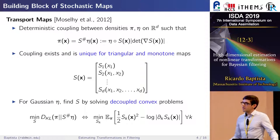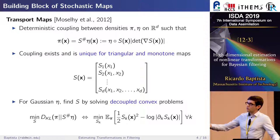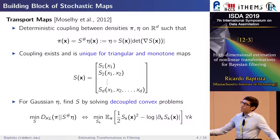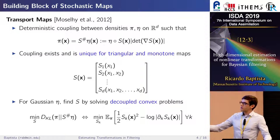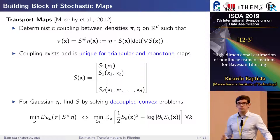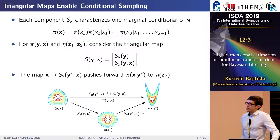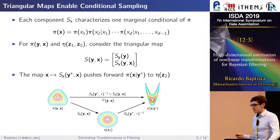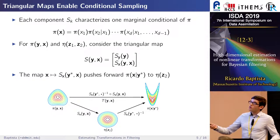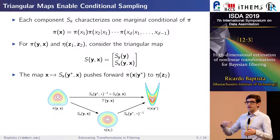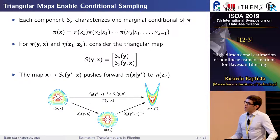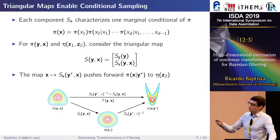This optimization problem decouples into K convex problems for each map component. Given samples from target pi, we approximate the objective using Monte Carlo and solve for each map component S_k. A third advantage of triangular maps is that they enable conditional sampling: each component S_k is linked to one of the conditionals in the factorization of the joint density — S_k is related to the conditional pi of x_k given x_1 through x_{k-1}.